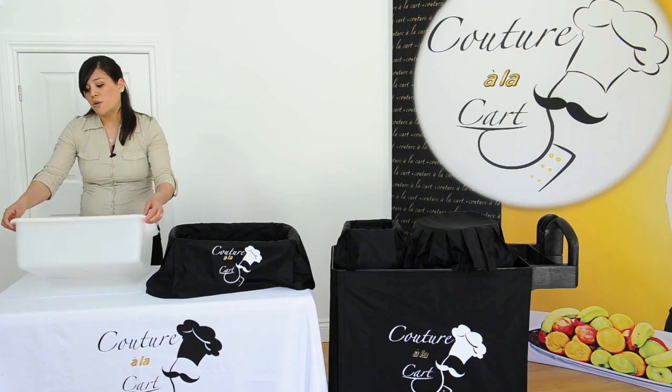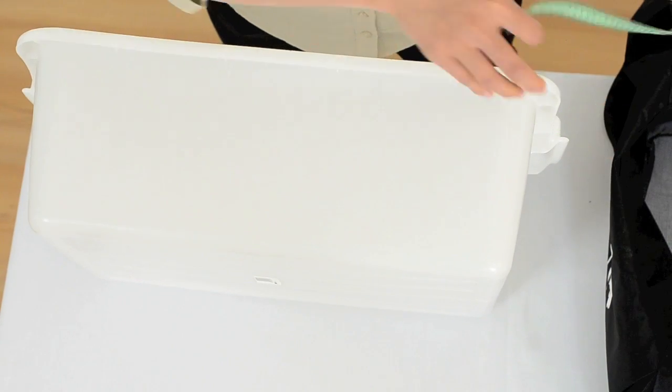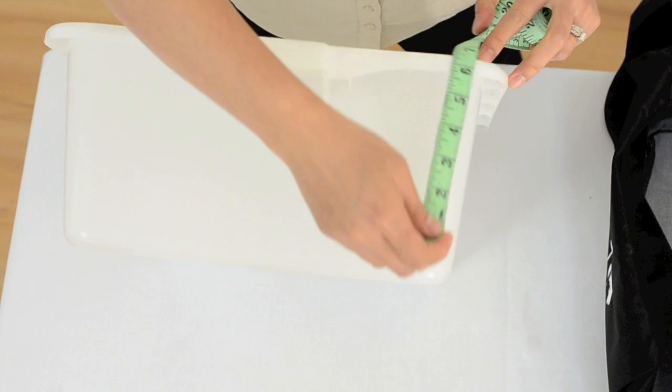For the outside, most bins have these tabs. You're going to measure tab to tab for the length, tab to tab for the width, and for the height, you're going to go top to bottom.